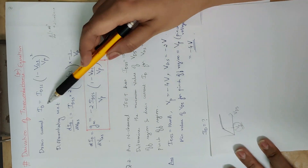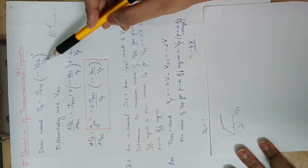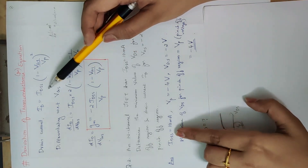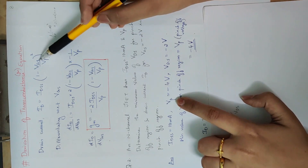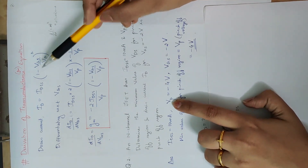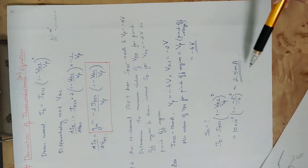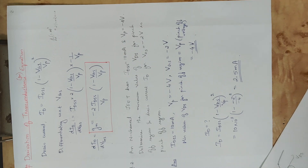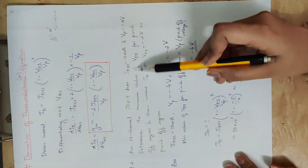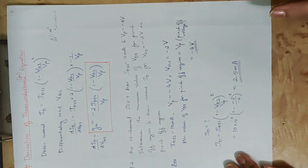The drain current equation is: ID = IDSS × (1 − VGS/VP)². All the quantities are known, so we substitute to find the drain current. The minimum value of VDS for the pinch-off region equals the pinch-off voltage, which is the same thing.